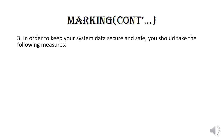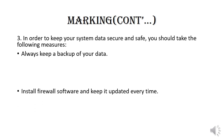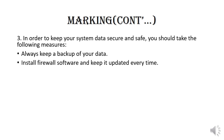Number three: In order to keep your system data secure and safe, take the following measures. Always keep a backup of your data — a backup is a copy of data on an external storage device like an external hard disk. Install firewall software and keep it updated. A firewall is either a piece of software or hardware whose purpose is to block unauthorized access within a given computer system.